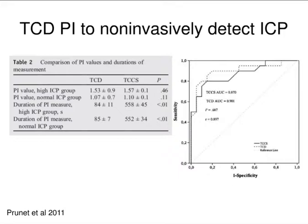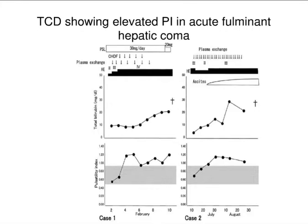Absolutely normal pulsatility index — if we were to do everyone's transcranial Doppler in the room — is about 0.5 to 0.6. So 1.5 is roughly twice normal. This is an area under the curve showing good sensitivity and specificity of these particular cut points. In patients who have hepatic coma with cerebral edema and coagulopathy, where you don't want to place something inside the brain because they may bleed, transcranial Doppler ultrasound may be a good marker for brain edema. You can see the pulsatility index going up over time in such a patient.